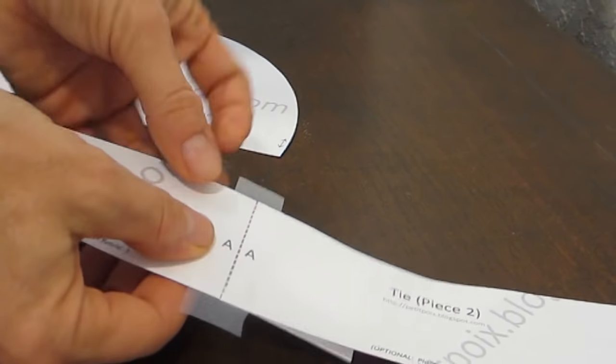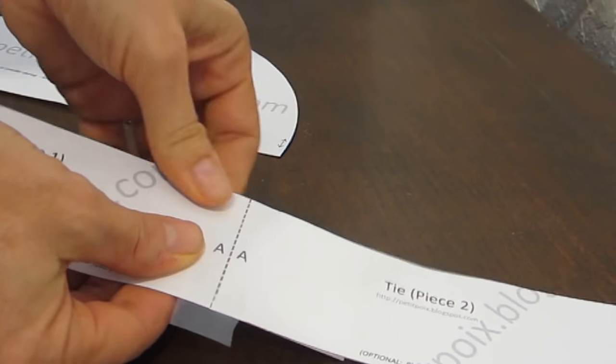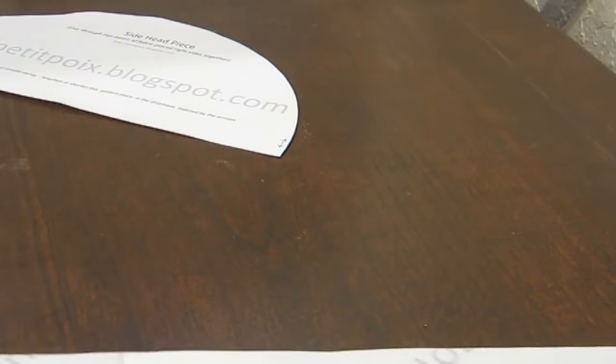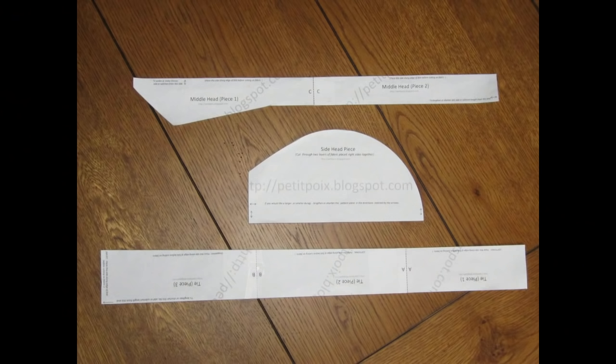And now untape it from the table and just fold over the tape to the back. And then you have your pieces completed.